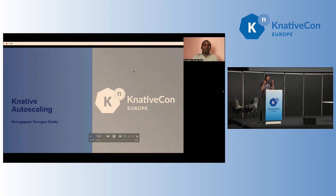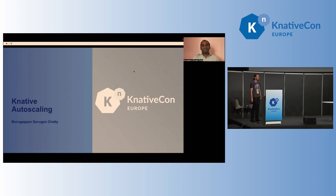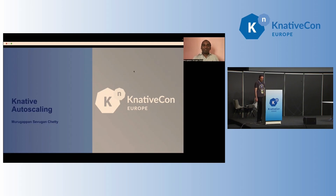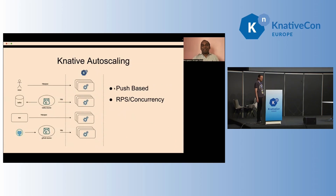We're going to be talking about my favorite feature in Knative, which is the Knative pod autoscaling. Another favorite feature of mine is the developer experience you get out of Knative — you create one Knative service and that creates all the Kubernetes artifacts for you. You also get auto TLS and custom domain. About Knative autoscaling: there are two metrics it could use — one is concurrency, the number of concurrent requests your application receives, or number of requests per second.